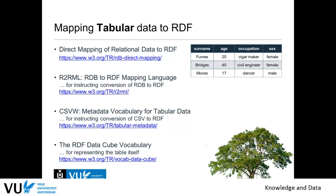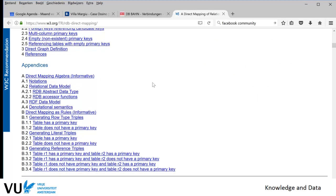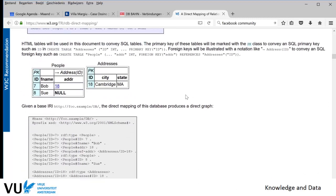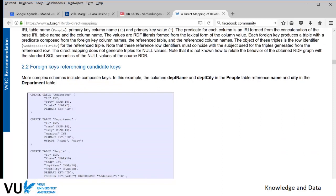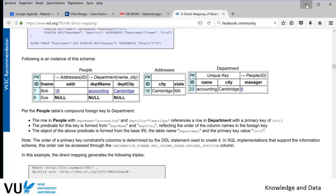You have a data table with name, age, occupation, and sex, and you want to use this information and turn it into RDF, into a knowledge graph, so you can integrate it with other knowledge graphs and reuse it in your application. The first way to do this is what's called a direct mapping of relational data — I recommend you follow that link. There is a direct mapping algebra you can apply, following rules about what the function of foreign keys is. This is the same type of rules you thought of in your first assignment, here systematically written down.